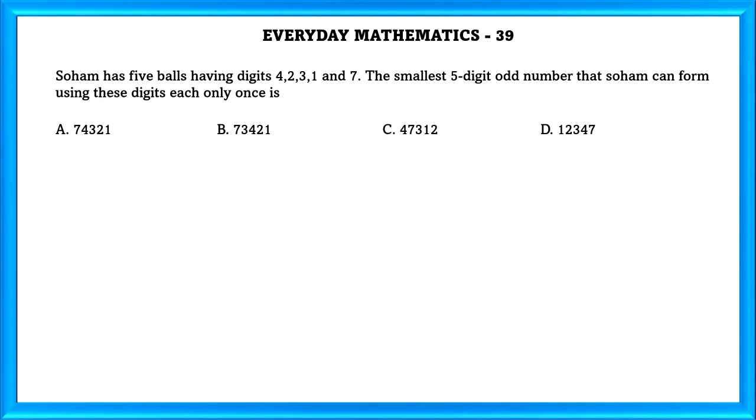Everyday Mathematics Question Number 39: Sohan has 5 balls having digits 4, 2, 3, 1, and 7. The smallest 5-digit odd number that Sohan can form using these digits each only once is